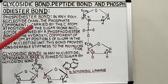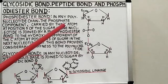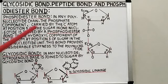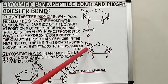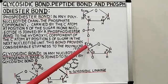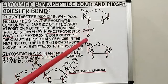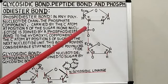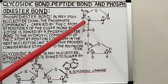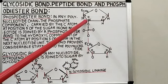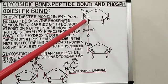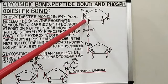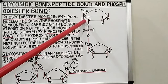In any polynucleotide chain, the phosphate component carried by the carbon atom at position 5 of the sugar in one nucleotide is joined by a phosphodiester bond to the hydroxyl component of the carbon at position 3 of the sugar in the next nucleotide unit.